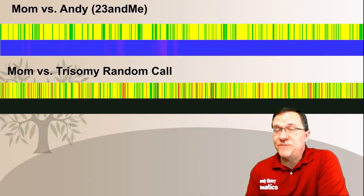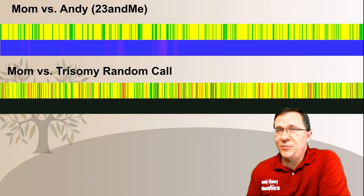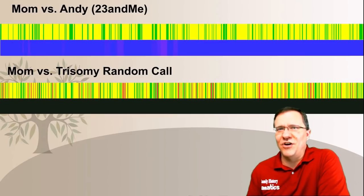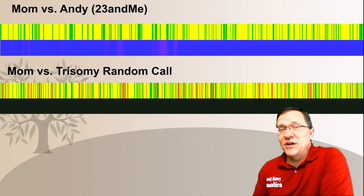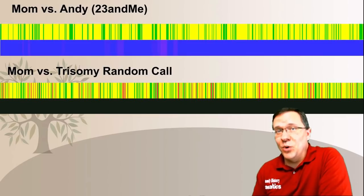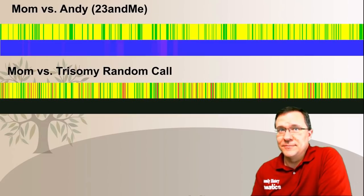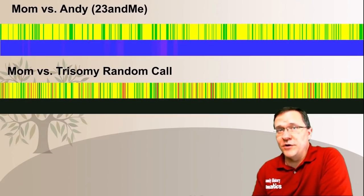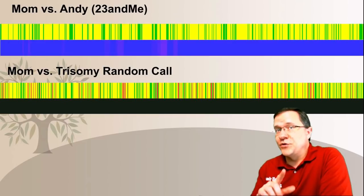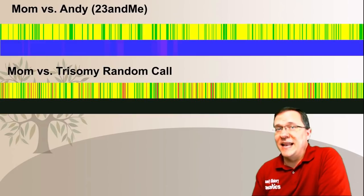When I compare it to my mother, the first thing that should jump out to you is that normally I should be a half match for my mother, but in this case I'm not — I'm not a match at all for my mother. There are also a lot of red marks. Each one of those red marks indicates a location where I pulled both of my father's SNPs and none of my mother's SNPs. All of my other chromosomes compared to my mom are going to be blue all the way across the bottom and mostly yellow with some green interspersed. But with the trisomy kit, it is black across the bottom indicating no match, and there is a lot of red.